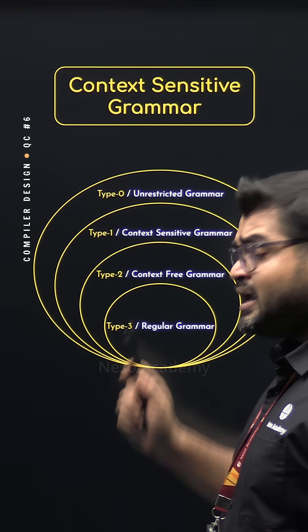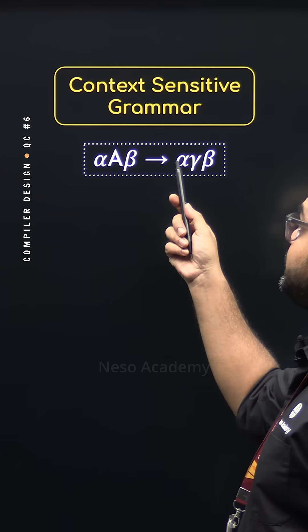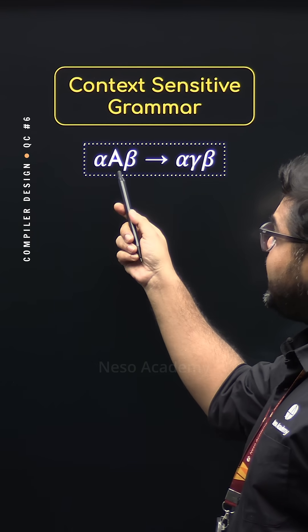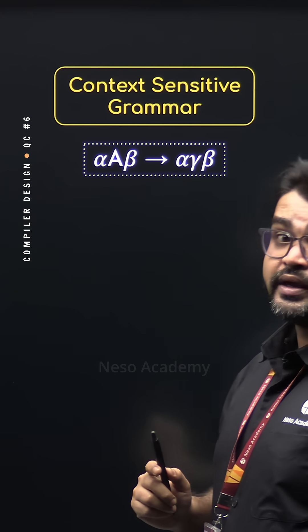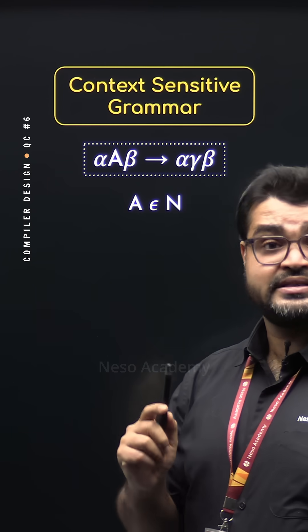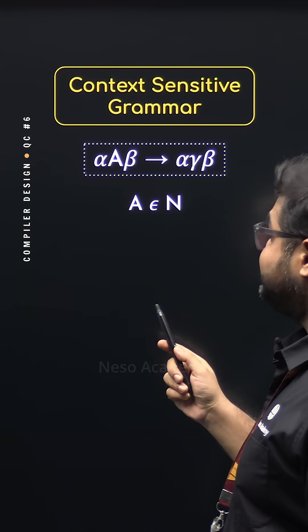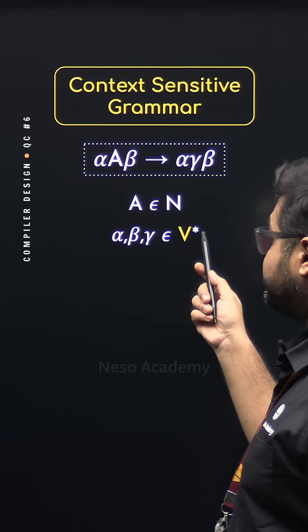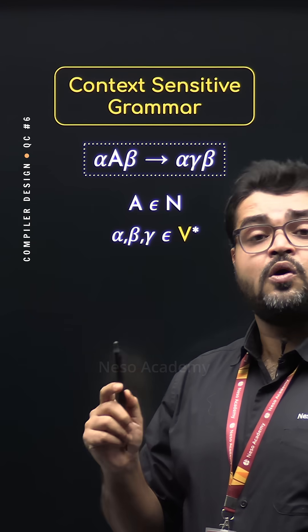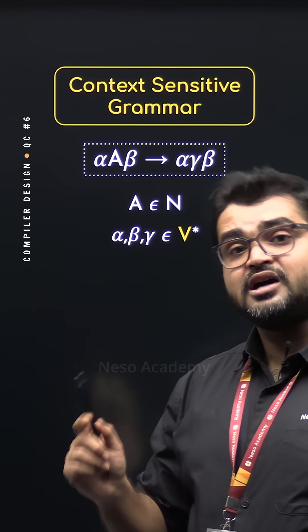Now for type 1, the production rules are of the form alpha A beta can be rewritten as alpha gamma beta. On the left-hand side, A is the non-terminal. So we can say A belongs to N, that is the finite non-empty set of non-terminals. The other symbols, alpha, beta and gamma, these belong to V star. What is V star? V star is N union T whole star, that is any string over non-terminals and terminals.